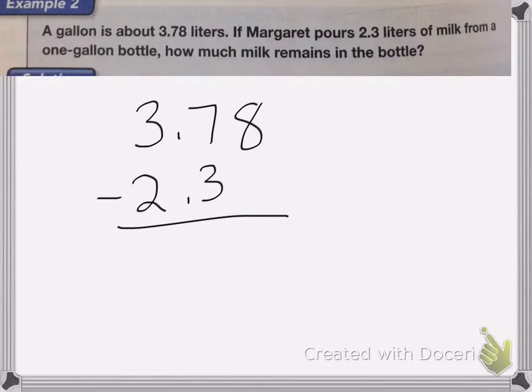Now in this one we're going to subtract just like we normally would. 8 minus nothing is 8, 7 minus 3 is 4, the decimal point comes straight down, 3 minus 2 is 1. So there are 1.48 liters left in the bottle.